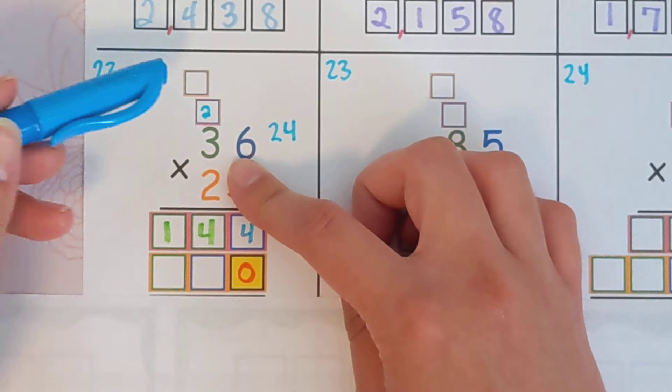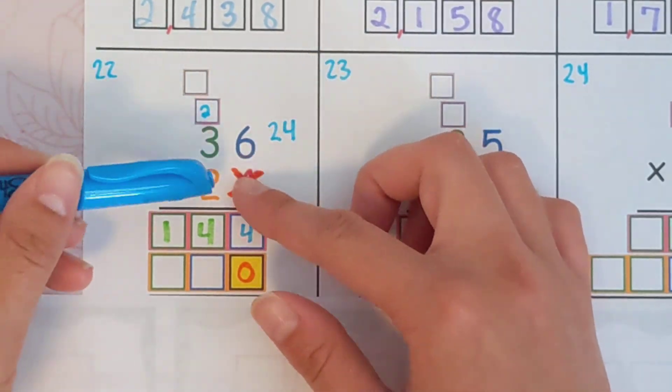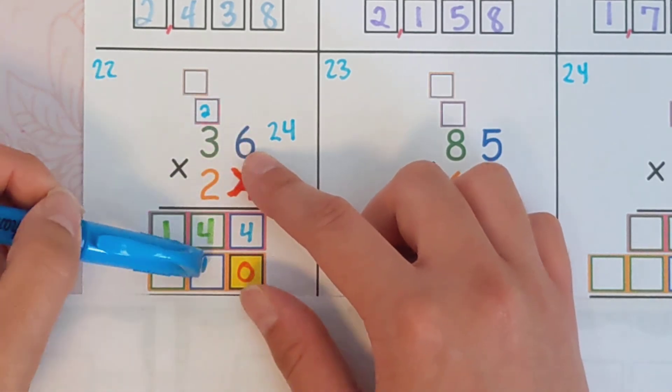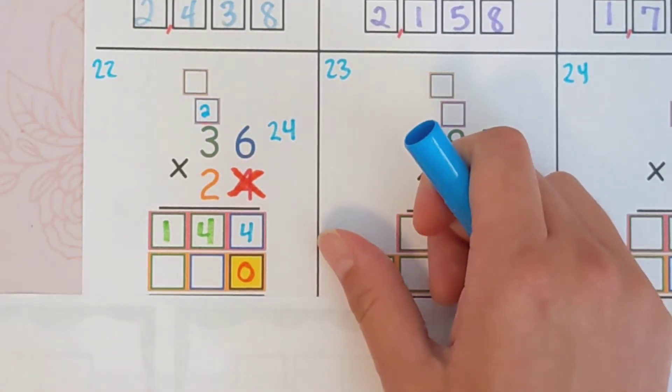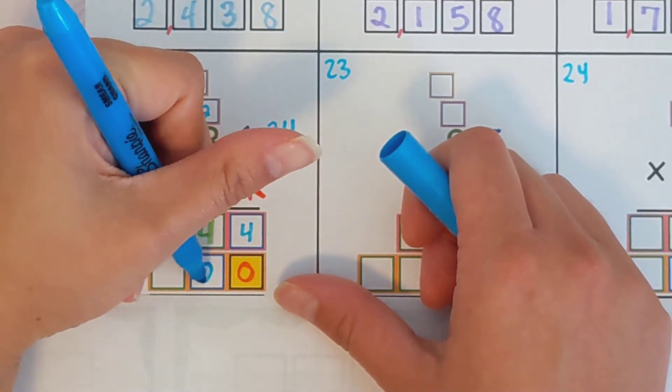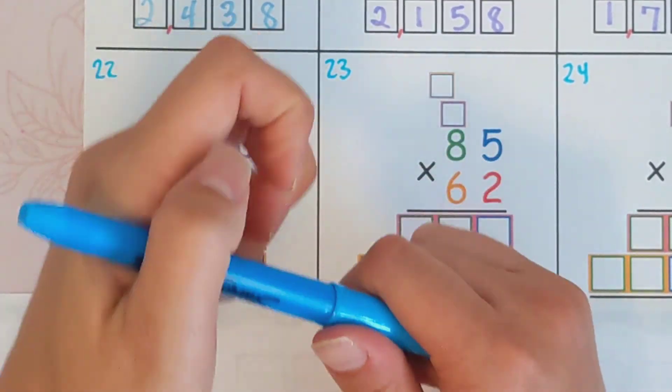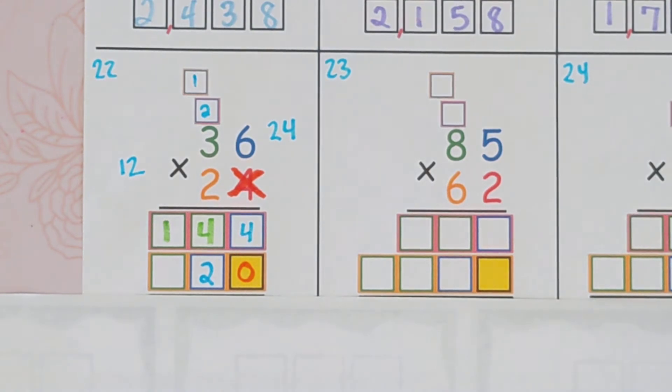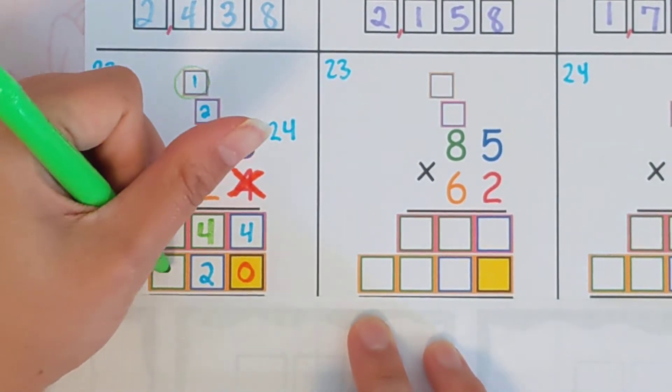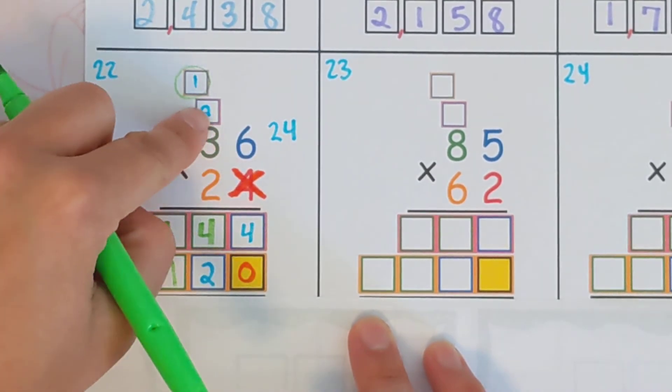So just follow the same steps as before, just like you did with the four. So you're going to do two times six and carry and then two times three. So and you can see the blue here just to kind of show I'm doing the blue right now. So two times six is 12. I'm going to carry.